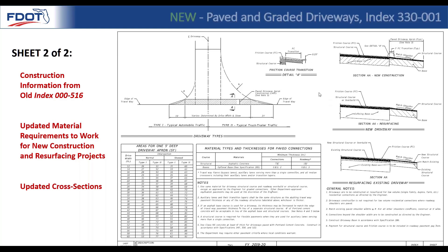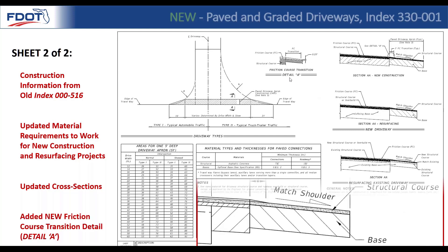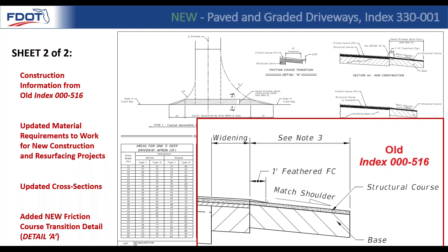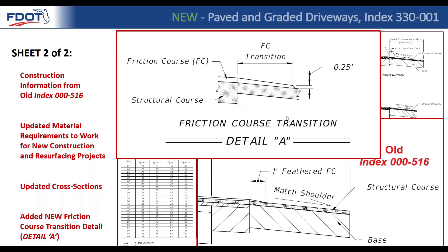Previously the friction course transition was called out as a one-foot feathering of the friction course. However, that wasn't always practical — you'd end up with raveling of the friction course if you tried to take it down to basically zero. We worked with the pavement section here at RDO and changed that transition to provide a quarter-inch drop-off at the end of the transition.